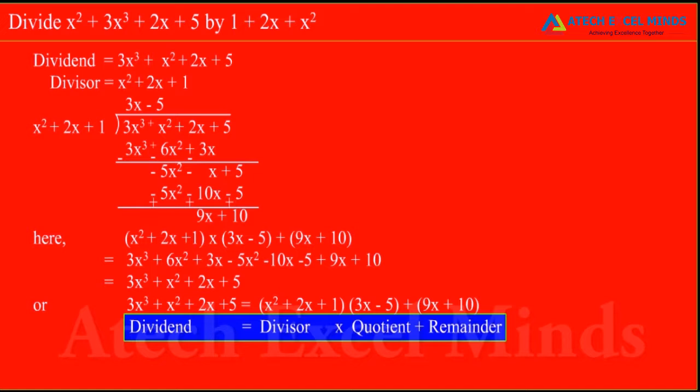Here, the highest degree term of dividend is 3x cube. To get the first term of quotient, divide 3x cube by the highest degree term of divisor, which is x square. We get the second term of quotient, 3x cube plus 5 is minus 5x square minus x plus 5. This is the new dividend.